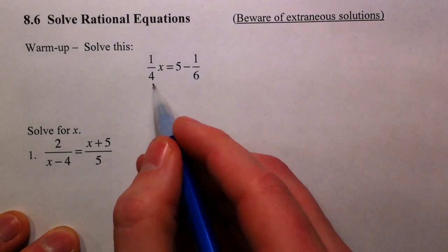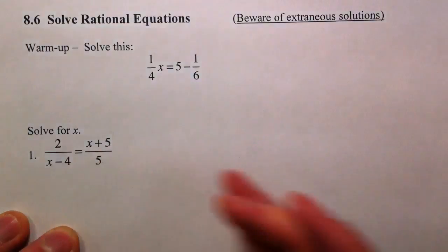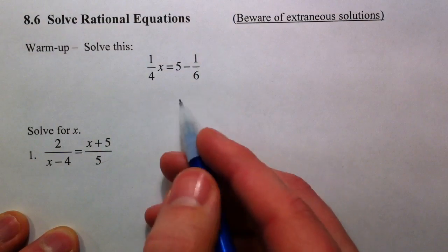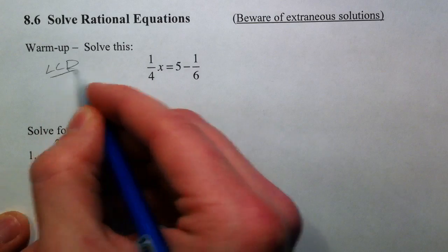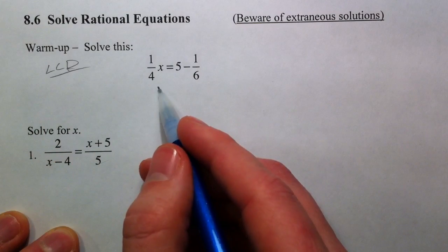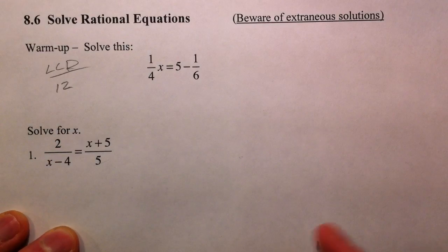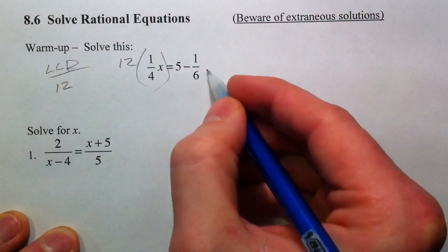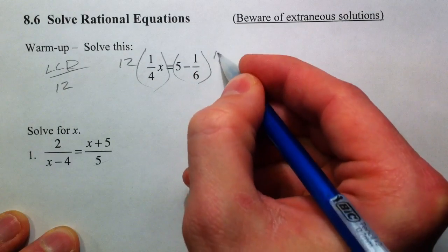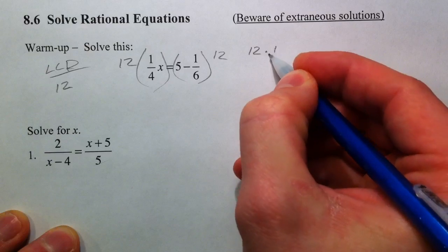The lowest common denominator of 4 and 6 would be 12, because 4 goes into 12 and 6 goes into 12. If we multiply the left-hand side by 12 and the right-hand side by 12, we get 12 times one-fourth x on the left. 12 times one-fourth: 4 goes into 4 once, 4 goes into 12 three times.